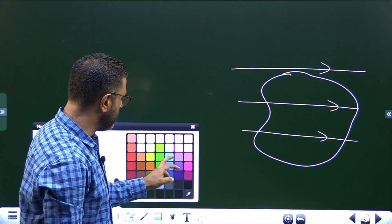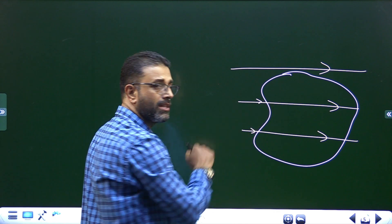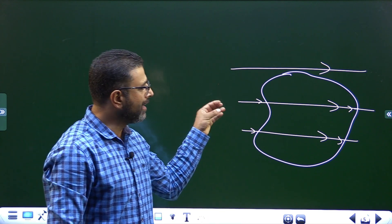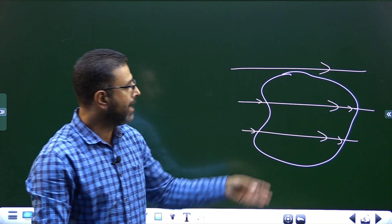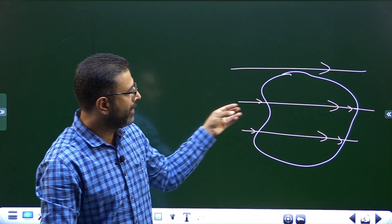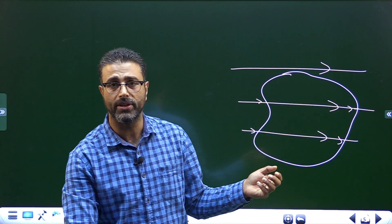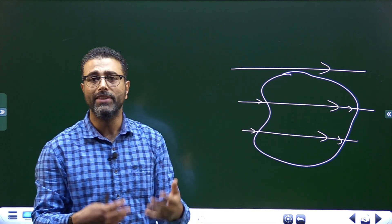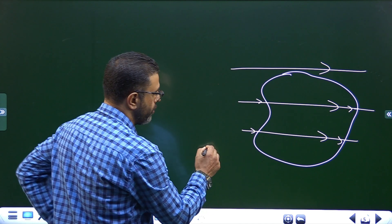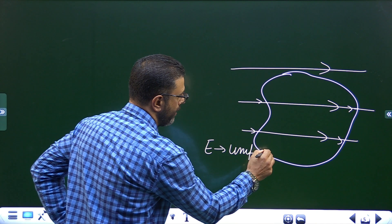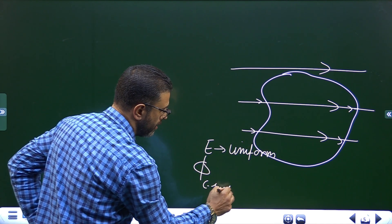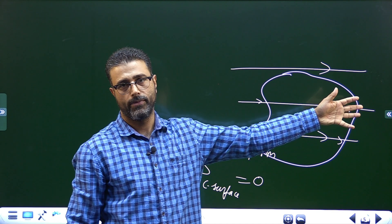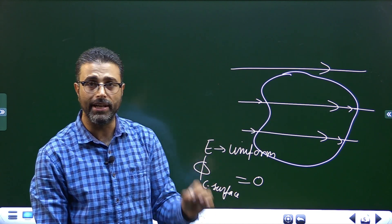Field lines going into the surface contribute negative flux, and field lines coming out contribute positive flux. If the inward flux equals the outward flux, the total flux is zero. So for a uniform field, the flux through any closed surface is zero — the uniform field does not contribute anything to the flux through a closed surface.